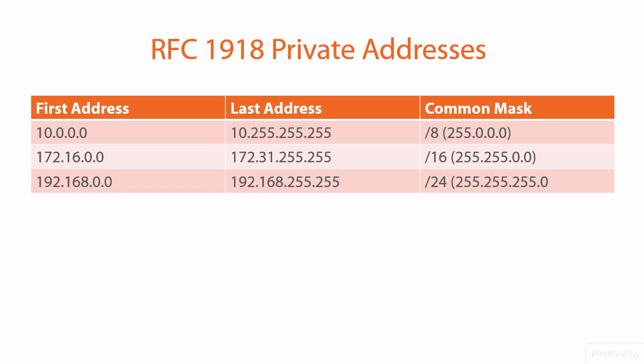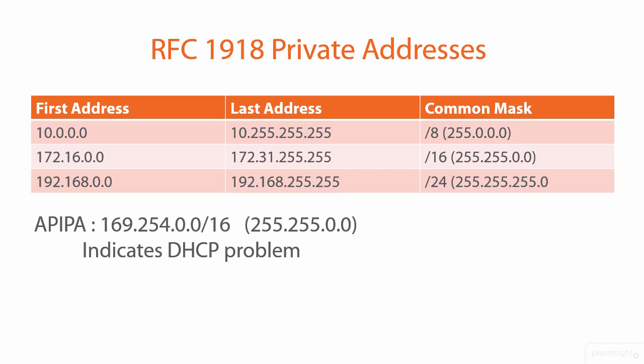That does bring an overhead, because when you think about it, your home cable modem router is going to have one and only one publicly routable IP that you're being leased by your internet service provider. But then you might have 15 hosts inside your home between your game console, your smartphones, and your computers. So there has to be some kind of network address translation between the private address and the public address.